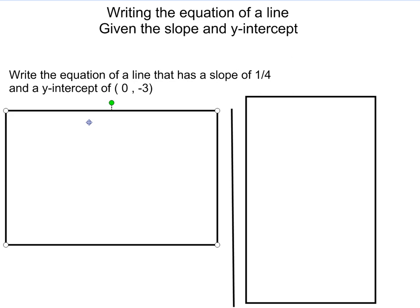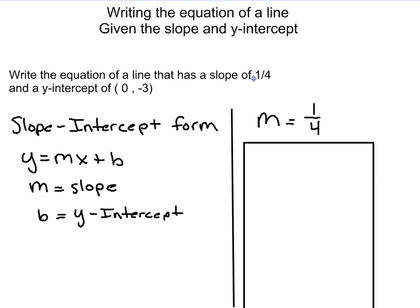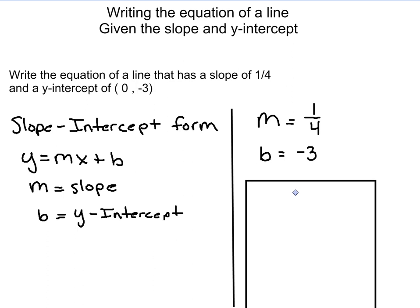So the first thing we're going to do is we're going to get some basic information. The way we're going to do this is we're going to actually use the slope-intercept form of the equation, which is y = mx + b. In this equation, m is my slope and b is my y-intercept. So we're going to take this information that's up here. The first thing is my slope is m, which is m = 1/4, and my b = -3.